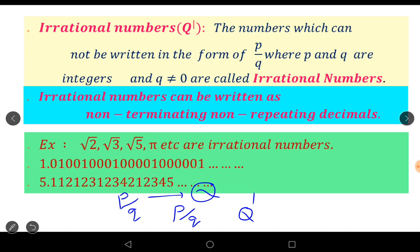For example, root 2, root 3, root 5. This is also irrational numbers. Surds. Pi is also approximately value 3.14, not exactly value. 22 by 7 is also approximately value. So pi is also irrational number.